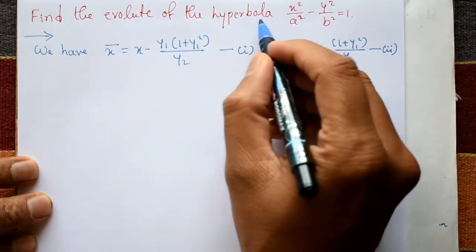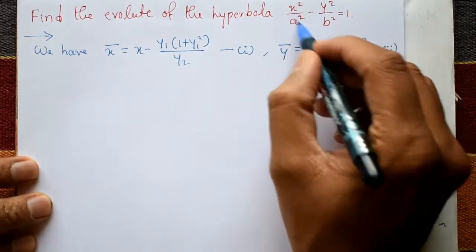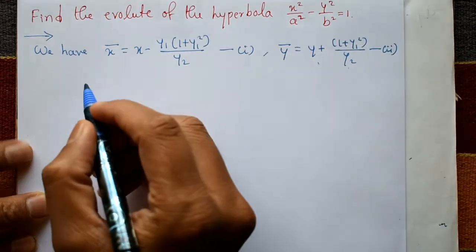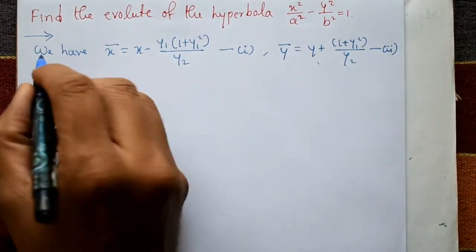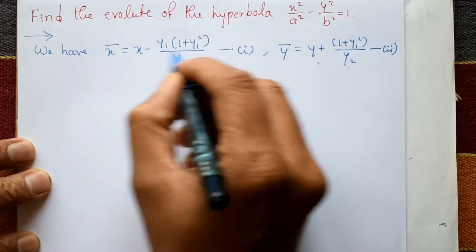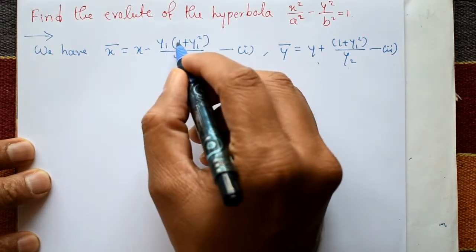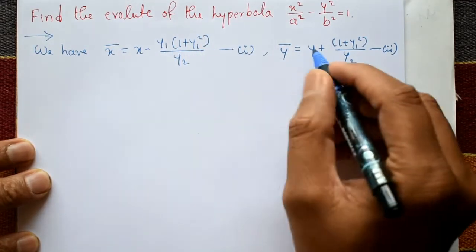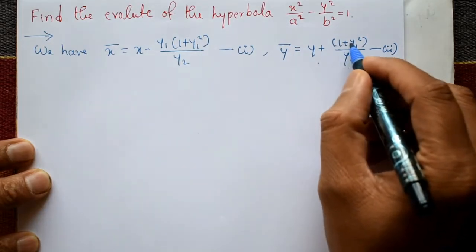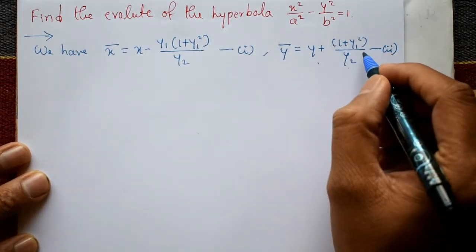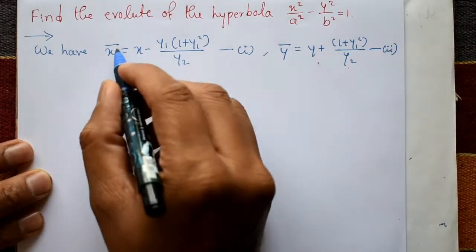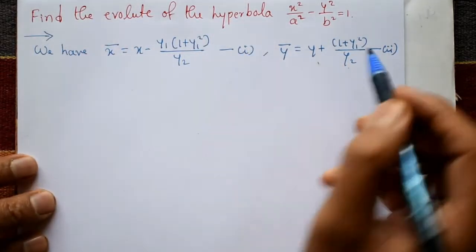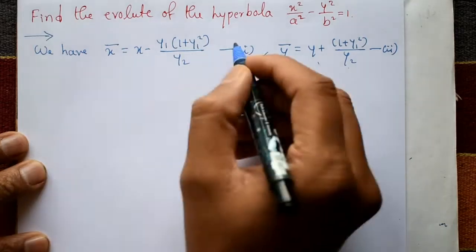Find the value of the hyperbola equation given x²/a² - y²/b² = 1. The solution uses x̄ = x - y1·(1 + y1²)/y2 as equation number 1, and ȳ = y + (1 + y1²)/y2 as equation number 2. We need x̄ and ȳ; these are given in equations 1 and 2. First, consider the parametric equation for this hyperbola.